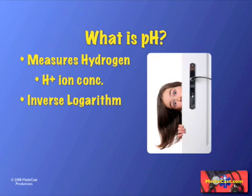pH is really confusing, though, because it's an inverse logarithm. As the percentage of hydrogen ions increases, the number on the pH scale goes down. When something is more acidic, it has a lower pH, and that's what causes confusion for people trying to understand this.